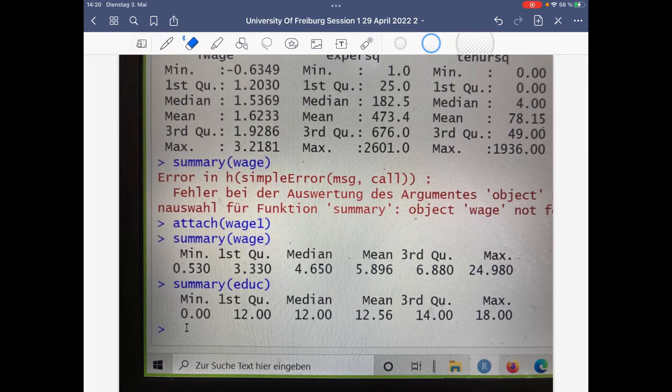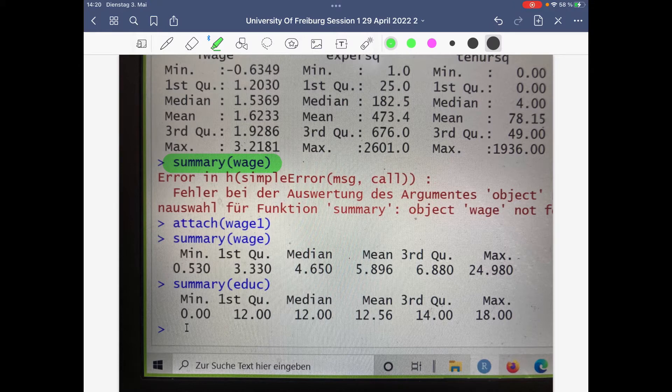If you just want to have some summary statistics with respect to one variable such as the wage variable, you type in summary wage. This typically does not work. Please, the magic command is attach wage one. Attach the data set, and then in the second round the summary wage command works.